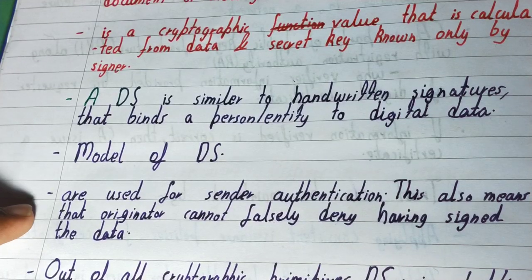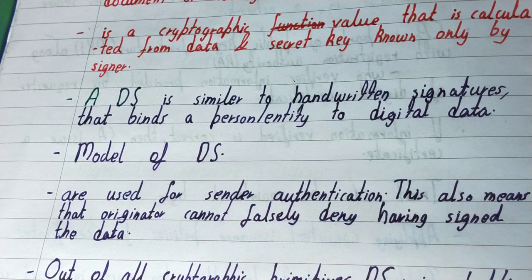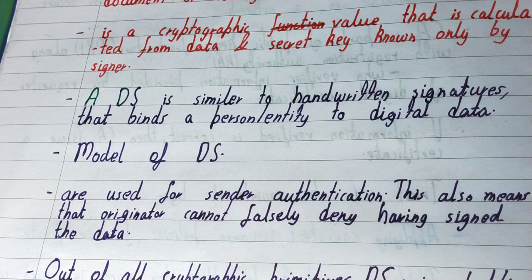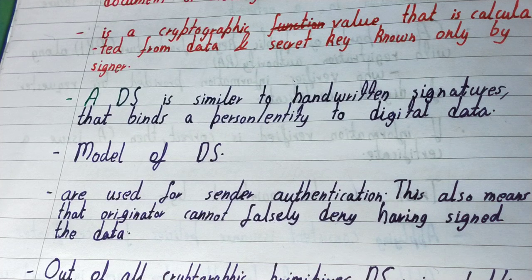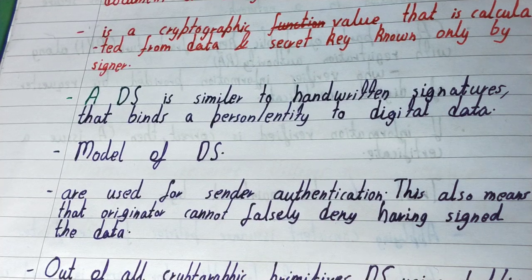Digital signatures are used for sender authentication. This also means the original sender cannot falsely deny having signed the data. If a document is sent using a digital signature, the sender cannot claim they didn't send it, because only the sender holds that private key — that is what makes it so secure.